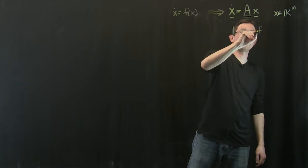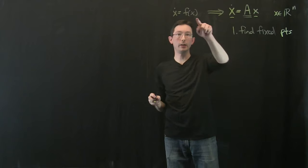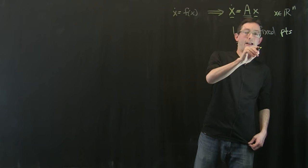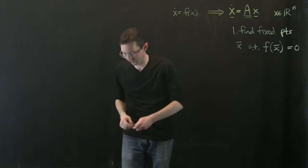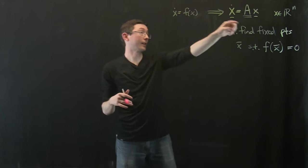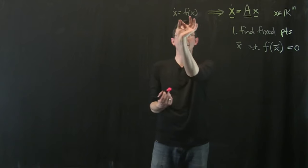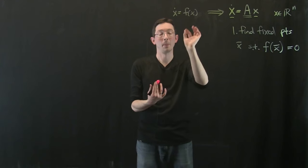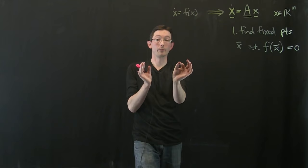The basic steps are: one, find fixed points. A fixed point is a point, let's call it x-bar, such that f of x-bar equals zero. In all of the possible state space of x in R^n, hopefully there are some points that are fixed so that d/dt of x at that point is zero because f of x at that point is zero. Those points are fixed - if I was perfectly at that point, it wouldn't move.